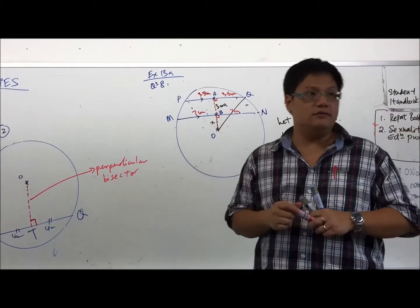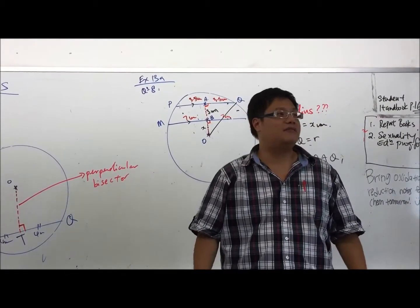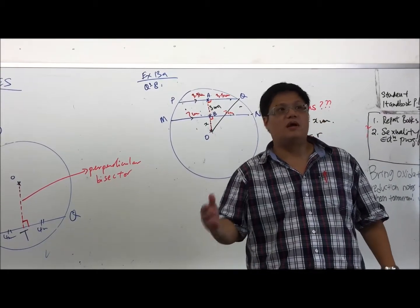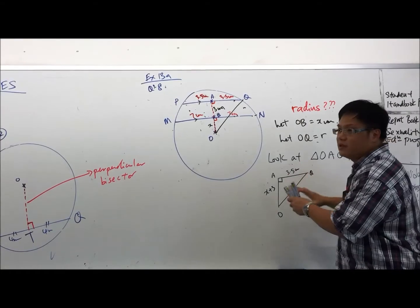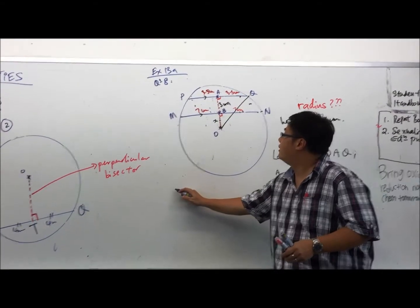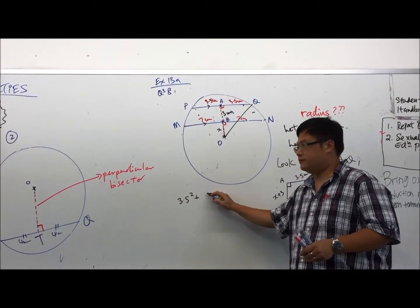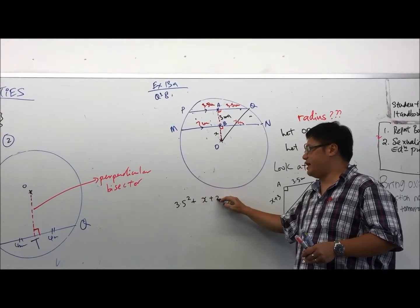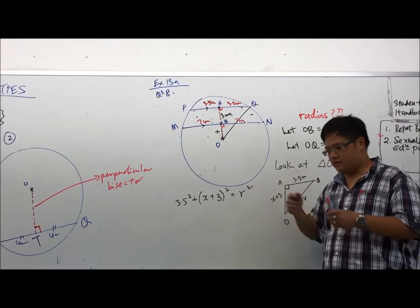When we see right angle triangle, and we have sides to deal with, one thing always comes to our mind first. What theorem comes to our mind? Pythagoras theorem. Very good. Pythagoras theorem. So what equation can be formed using the Pythagoras theorem? It will be 3.5 square plus x plus 3 square bracket square equals R square. R square.